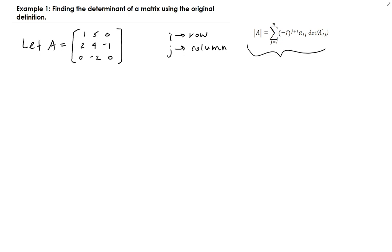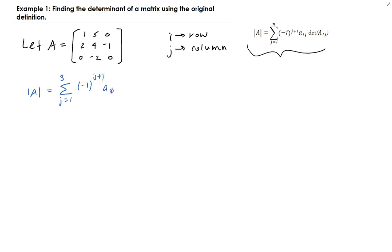For this specific matrix, we have the summation — this is a 3 by 3. Remember that for the determinant to exist, the matrix has to be a square matrix. So we're going to go from 1 to 3: we take A1J and then take the determinant of the remaining part.